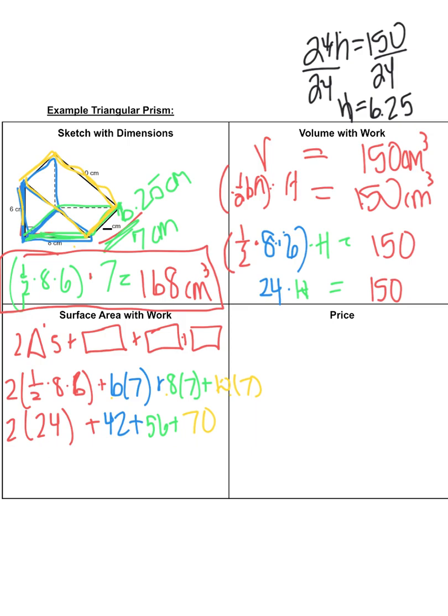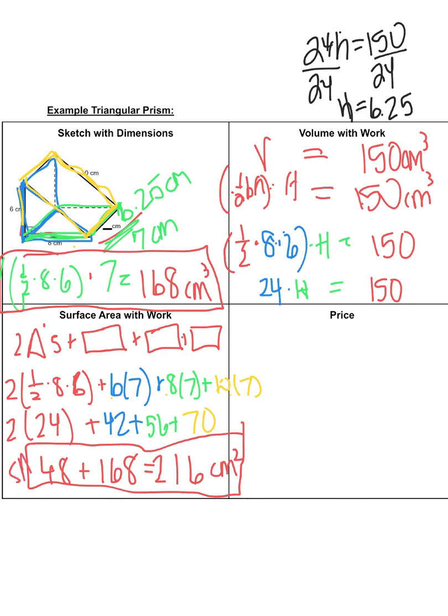So that means I would have 42 plus 56 plus 70. So when I add all those areas together I got 48 plus 168 is 216 centimeters squared. So there is the surface area of that prism that I'm making. So I found the volume. Here's the volume. This one's the volume. Here's the surface area. Okay good.